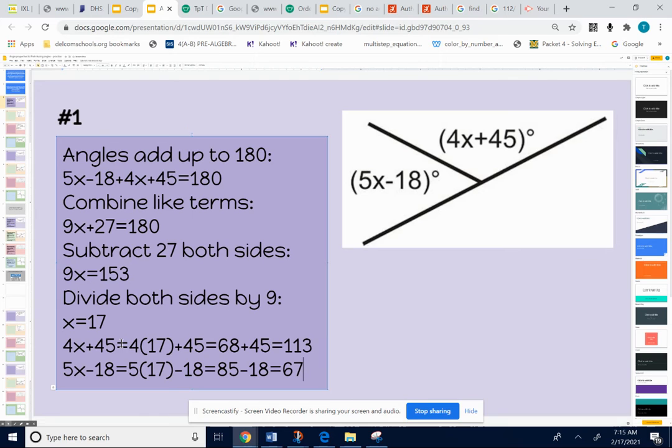So I used the relationship to write an equation that the angles add up to 180. I showed my steps when I solved my equation, and I got x is equal to 17. And then I put 17 into both expressions so I could figure out what the angles are. And you can double check this. If you add 113 and 67 together, you're going to get 180 degrees.